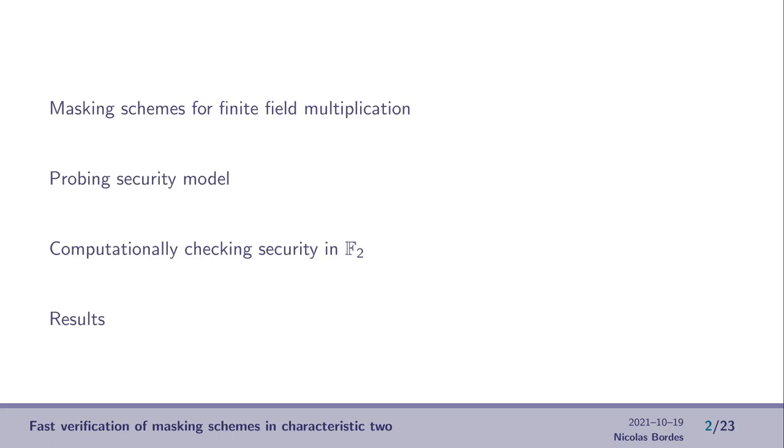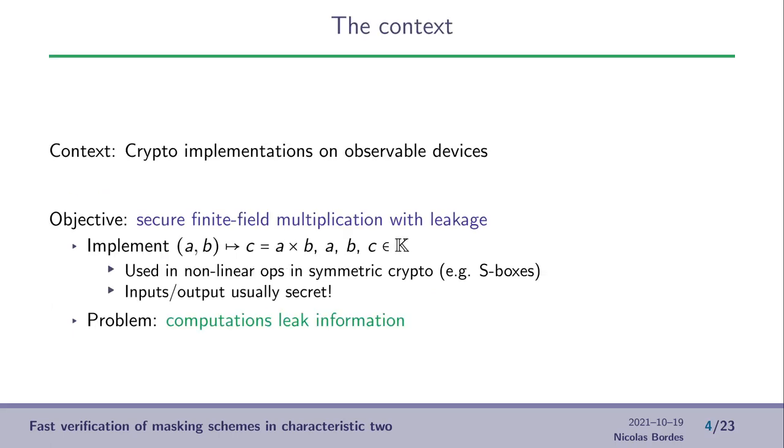So first a little bit of context. We want to make crypto implementations on observable devices and more specifically we want to do secure finite field multiplication in presence of leakage. Such operations are often used in non-linear components in symmetric crypto.